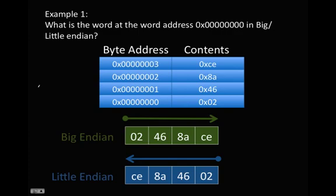Okay, so here we have an example. What is the word at the word address 0 in hexadecimal in Big Little Endian. So we have our byte address, starting with 0, 1, 2, 3. We have our contents. These are the bytes that are in each byte address.